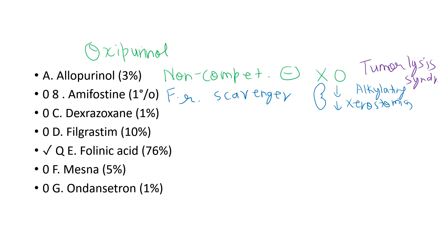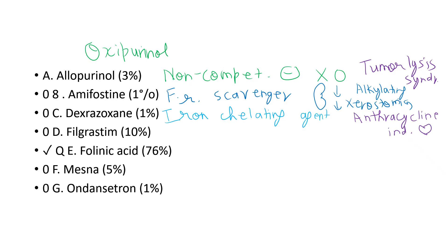Dexrazoxane is an iron chelating agent that prevents anthracycline-induced cardiotoxicity. Filgrastim, as the name suggests, is a granulocyte colony-stimulating factor (G-CSF) analog — granulocytes being basophils, eosinophils, and neutrophils — used to stimulate the proliferation and differentiation of granulocytes in patients with neutropenia. Folinic acid is the correct answer for this question.